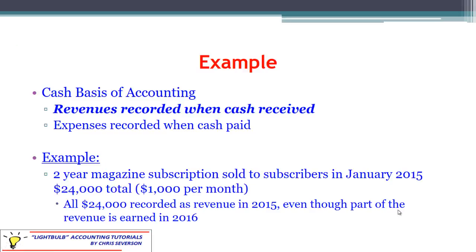First, let's talk about the details of each type. Under the cash basis of accounting, revenues are recorded whenever we receive the cash, regardless of when we provided the services. It's all about when the cash came to us. Expenses are recorded when the cash is paid. It's pretty straightforward and easy to track. Most individuals doing personal financial accounting use the cash basis — they want to know when cash came in or went out.